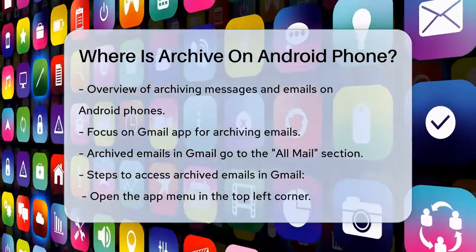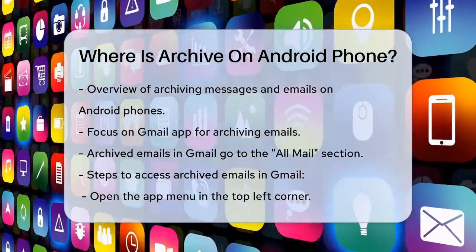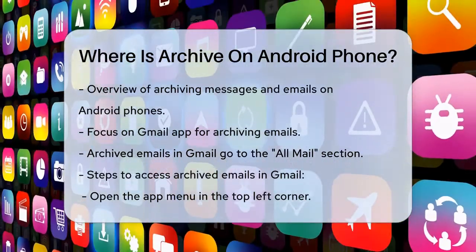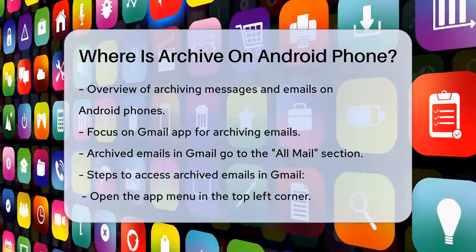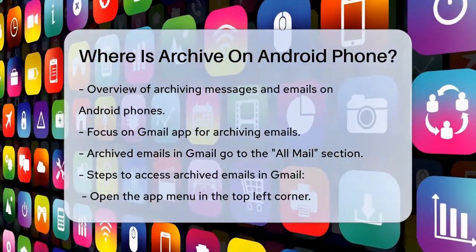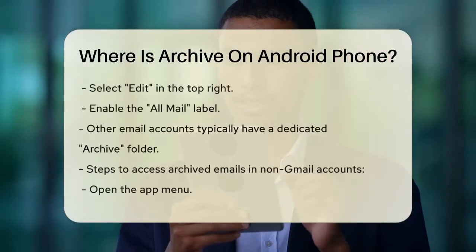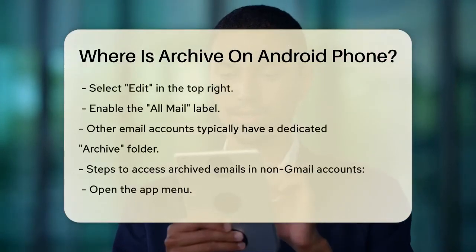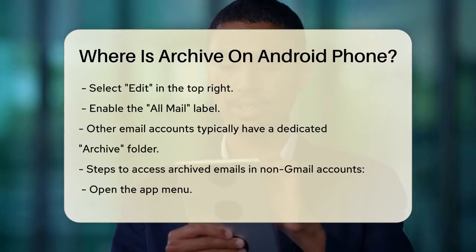For Gmail accounts, archived emails don't actually go into a separate archive folder that you might see on other mail clients. Instead, they get moved to the All Mail section. To find these archived emails, you need to navigate to the app menu, usually found at the top left corner of the Gmail app.